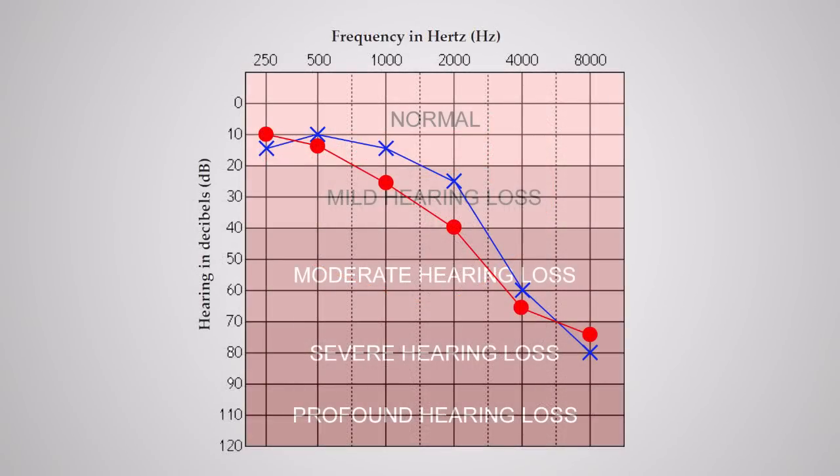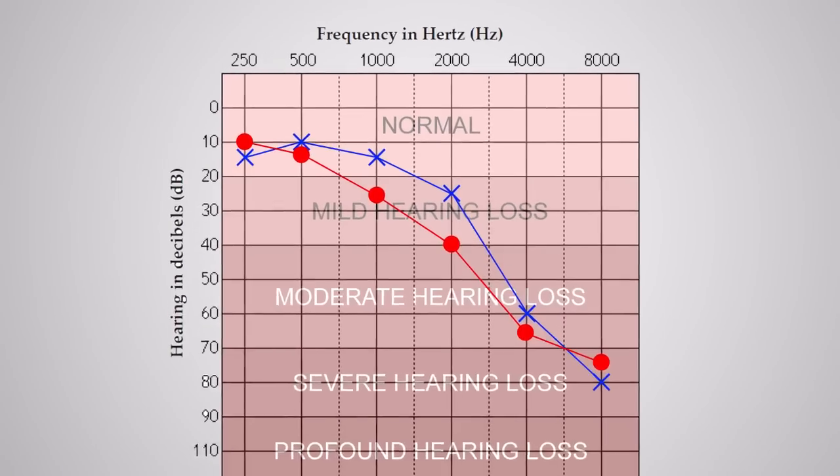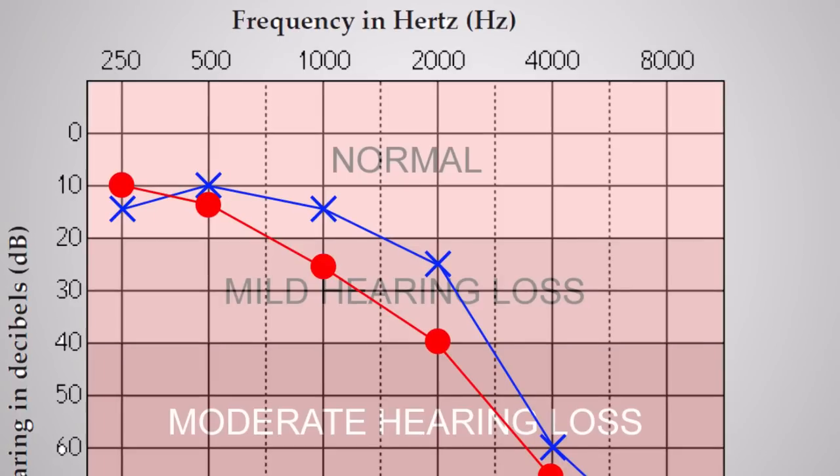Let's take an example of an audiogram from someone with severe high-frequency loss. For the red line, which is the right ear, at 2,000 Hz we would need to add 20 dB of gain to get that frequency to a normal range.